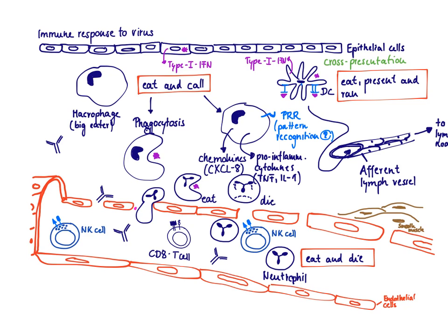Another very important innate cell circulating in the blood that helps clear viral infection is the NK cell — the natural killer cell. As the name implies, it kills virally infected cells. The killing methods used by NK cells and CD8 T-cells are very similar; however, how they recognize their target cells is very different. The NK cell circulates in the blood and, once specific chemokines are released, migrates to the site of infection to help clear it.